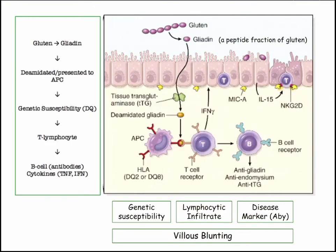Celiac is autoimmune with genetic susceptibility. The deamidated negatively charged gliadin peptides are phagocytized and presented via MHC HLA-DQ2 and DQ8. CD4 cells produce cytokines — gamma interferon and TNF — causing tissue destruction in genetically susceptible patients. Ultimately you get T cells, B cells, autoimmunity, and blunting of the villi.